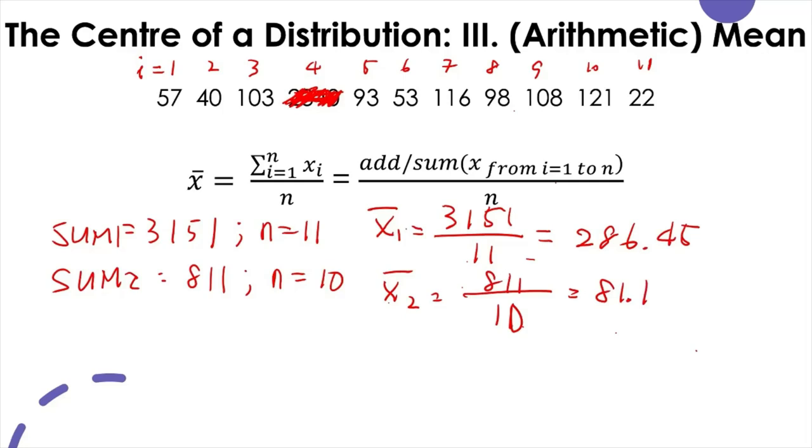If you compare these two, you can see that there's quite a lot of change depending upon the existence of an outlier or the extreme value. So unlike median, the mean is heavily influenced by extreme values or outliers.